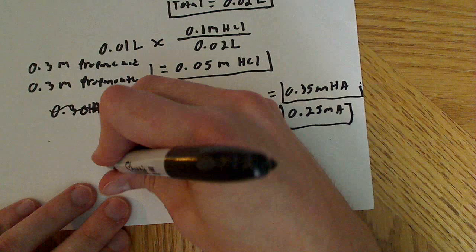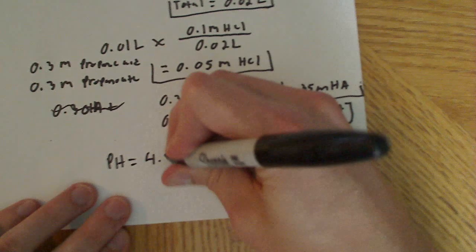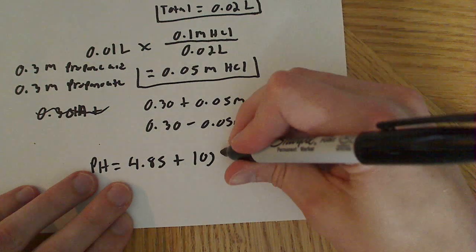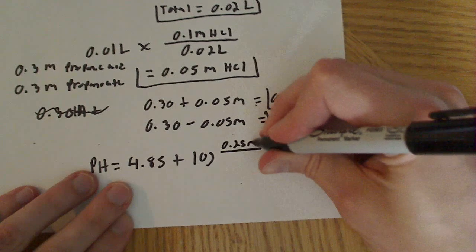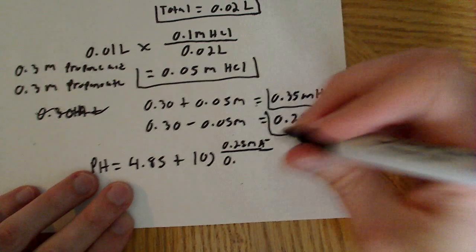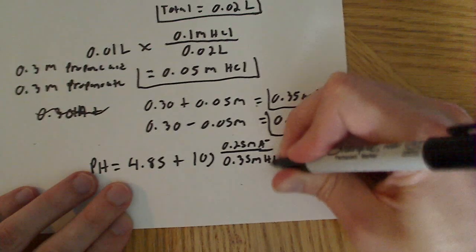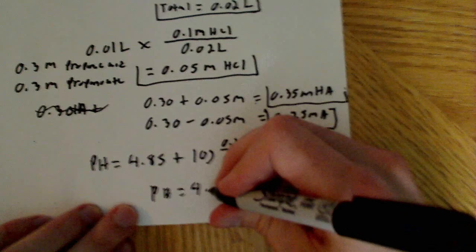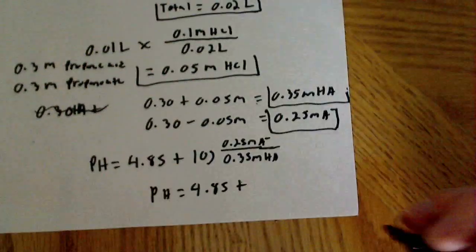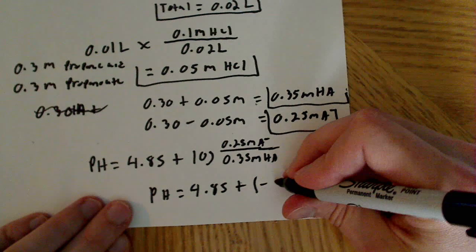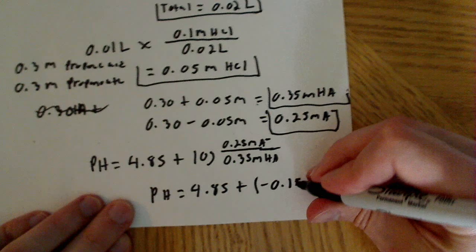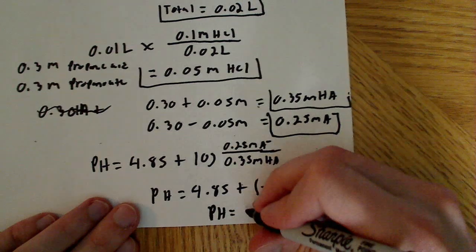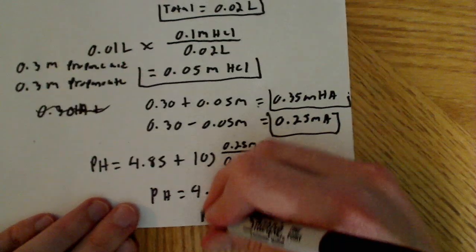And now we can plug all this into the Henderson-Hasselbalch. So pH equals 4.85 plus the log of 0.25 over 0.35. So the pH is equal to 4.85 plus a negative 0.15, and our final solution is the pH is equal to 4.7.